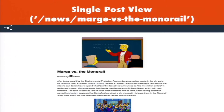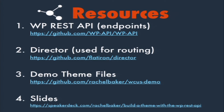What you end up with looks like this. That is it. I have some resources here: the WP REST API for the endpoints, a link for Director on GitHub, the theme files I used to make this on GitHub, and a link to my slides. I tweeted out my slides before we started, so you should see them under the WCUS hashtag. Thank you — I'd like to take some questions if anyone has any.